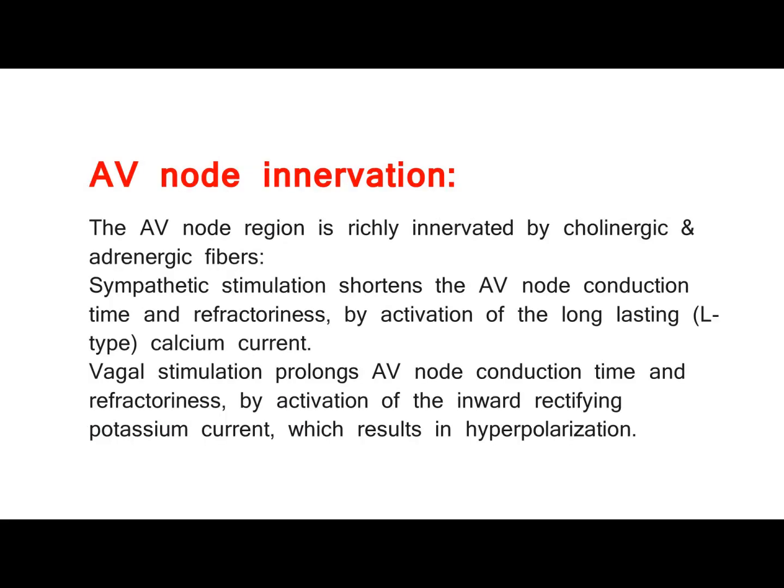AV Node Innervation: The AV node region is richly innervated by cholinergic and adrenergic fibers. Sympathetic stimulation shortens the AV node conduction time and refractoriness by activation of the long-lasting L-type calcium current. Vagal stimulation prolongs AV node conduction time and refractoriness by activation of the inward-rectifying potassium current, which results in hyperpolarization.